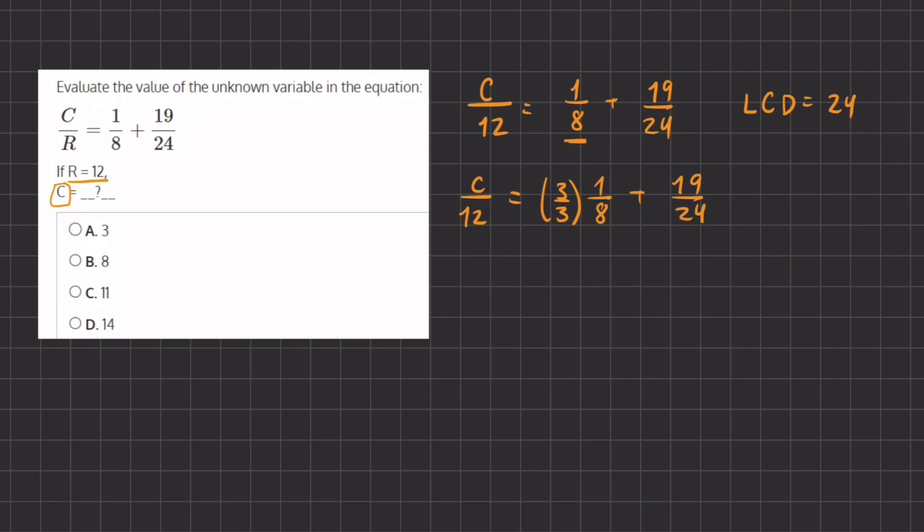And now let's simplify. We have c divided by 12 on the left hand side and we have 3 times 1, which gives us 3, divided by 24 because that's 3 times 8 plus 19 divided by 24. And now let's add these two fractions together.